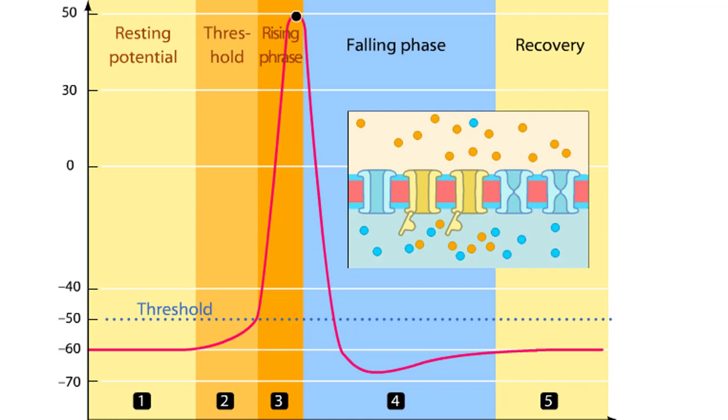At the peak of the action potential, two processes occur simultaneously. First, many of the voltage-gated sodium channels begin to close. Second, many more potassium channels open, allowing positive charges to leave the cell. This causes the membrane potential to begin to shift back towards the resting membrane potential.